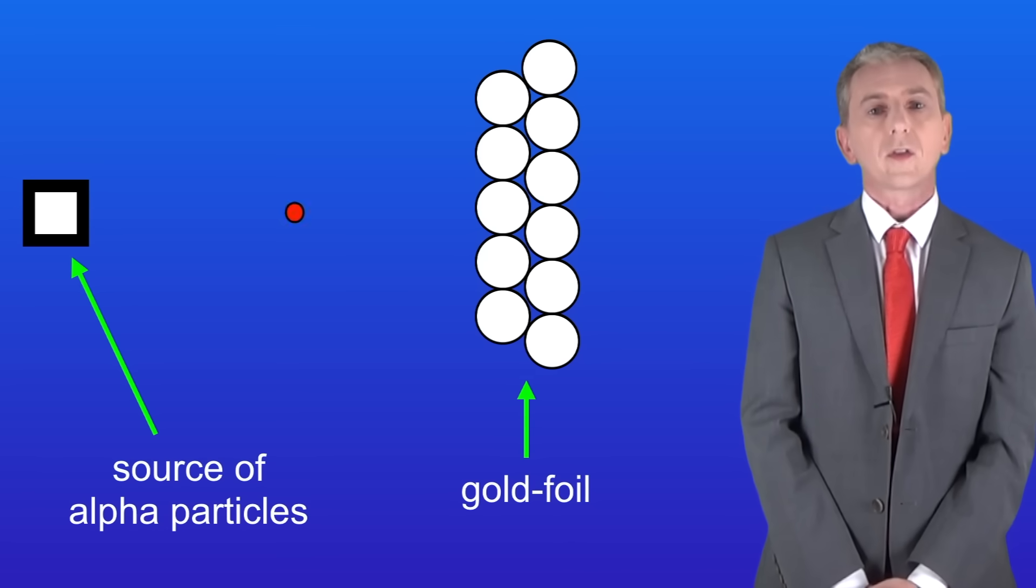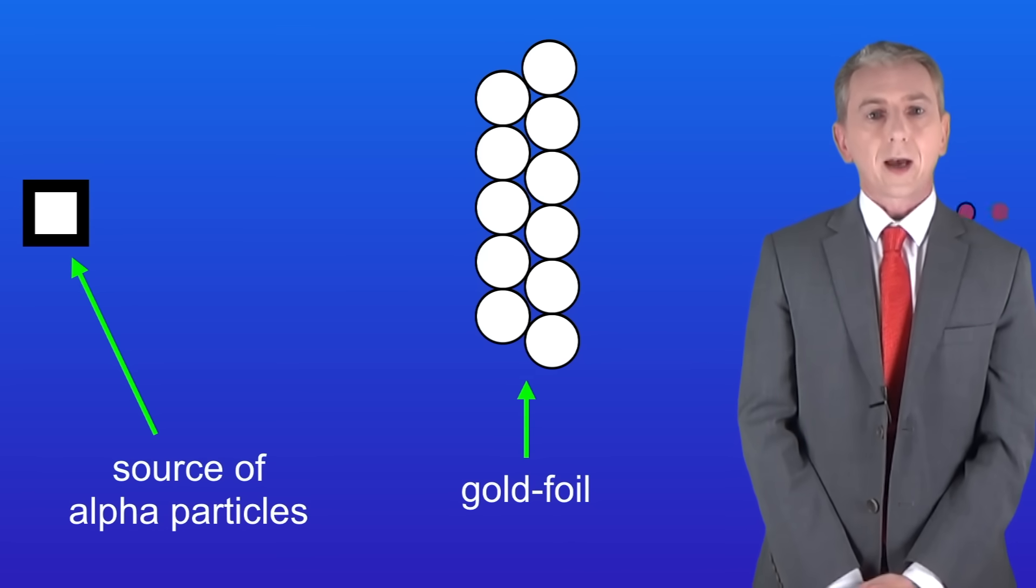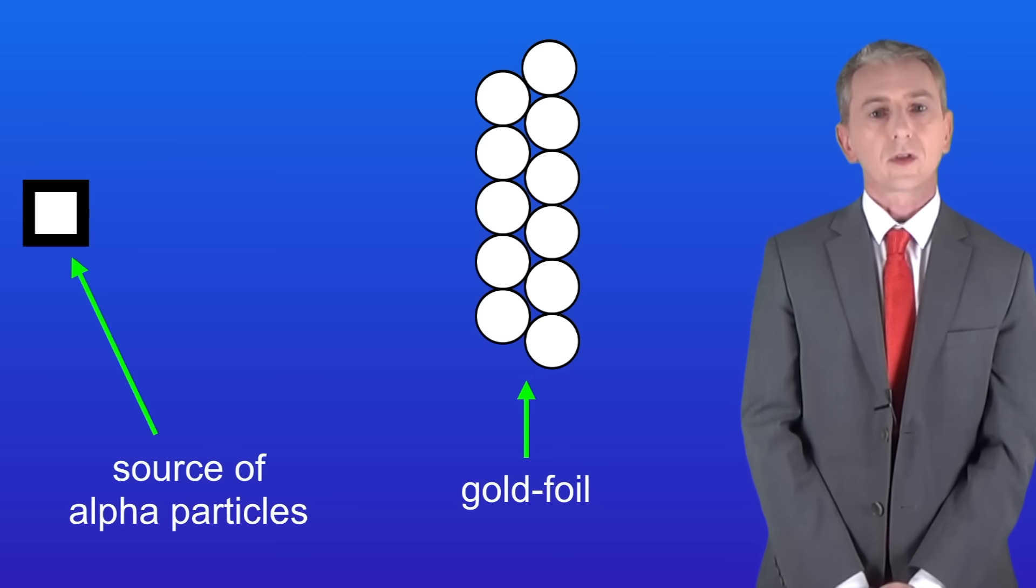They then fired tiny particles at the gold foil called alpha particles, and you'll find out more about these in later videos. Alpha particles have a positive charge.